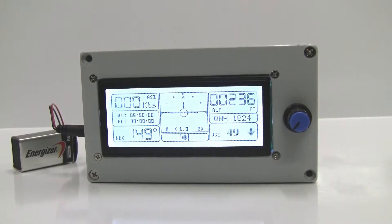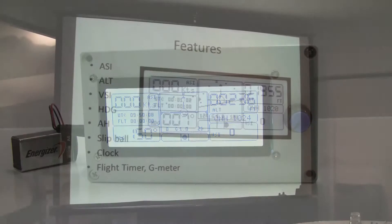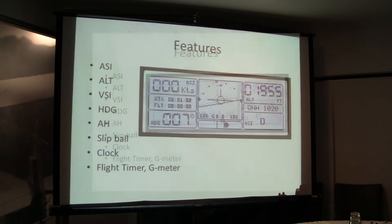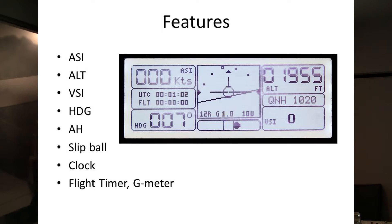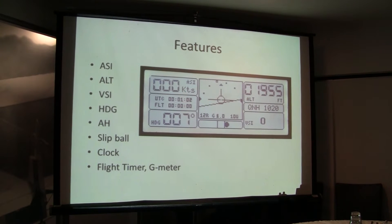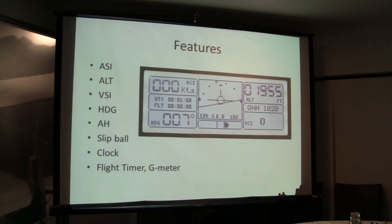So, basically, the idea was to make it a legal VFR instrument. So you get your airspeed indicator, altimeter, vertical spin indicator, the heading, artificial horizon, slip ball. There is no turn indicator, but artificial horizon, my understanding goes instead. And there is a clock that you have to have, according to VFR rules.